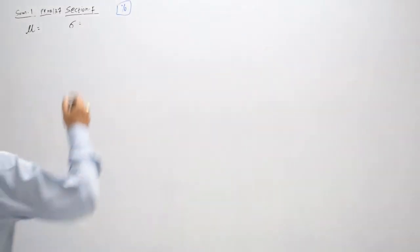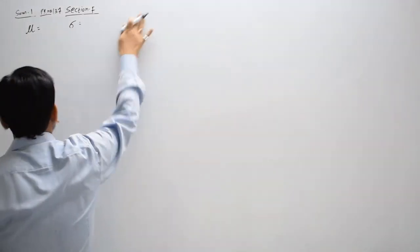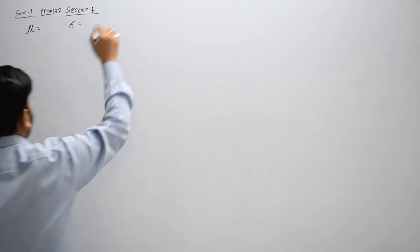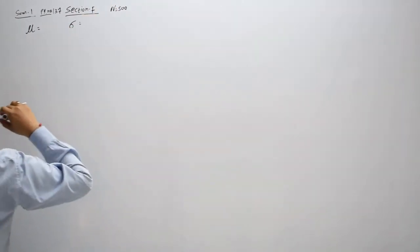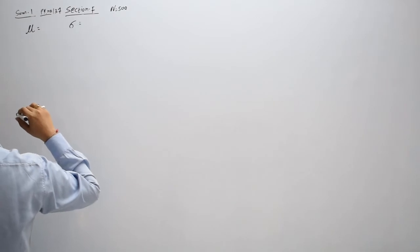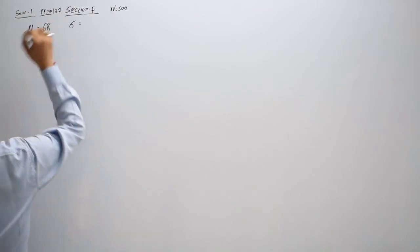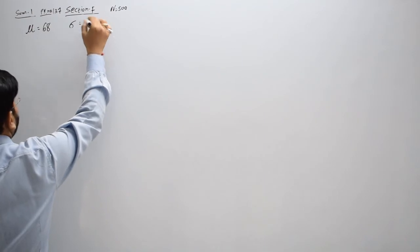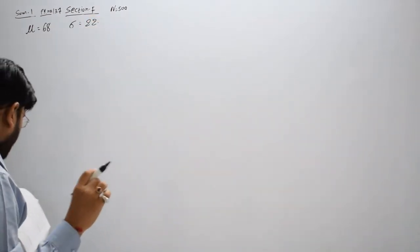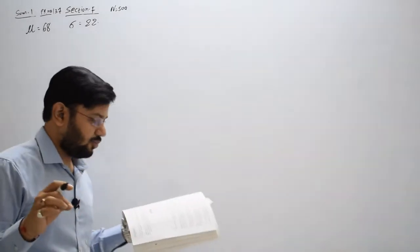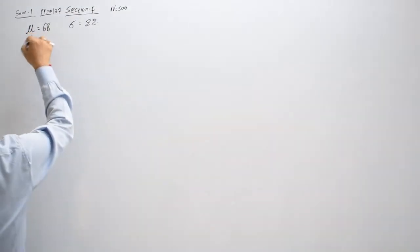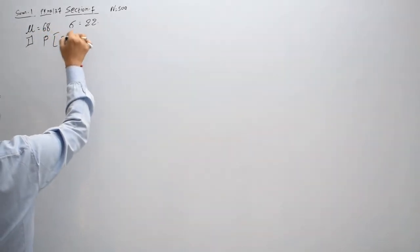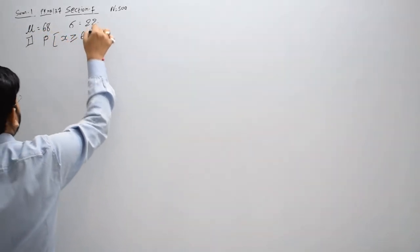Toh shuru karte hain. Yahaan pe jo information hai: total N = 500, average mu = 68, standard deviation sigma = 22. Pehla question — find out the number of children getting marks more than 68. Toh aap bologe, first question frame hoga: P(X ≥ 68).